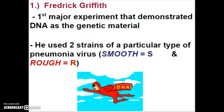He used a type of pneumonia virus. Viruses are nothing more than genetic material wrapped in a protein coat — not even technically a living particle. He used two strains of a pneumonia virus. One strain was called smooth, because the outside protein coat was smooth with no bumps. The other was the rough version, which had a lumpy, bumpy protein coat on the outside — so he called that the rough strain.